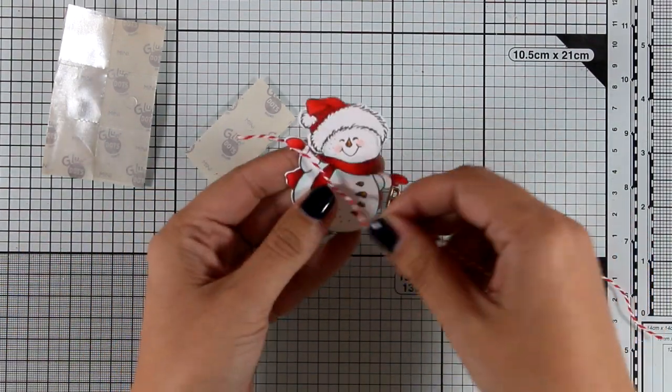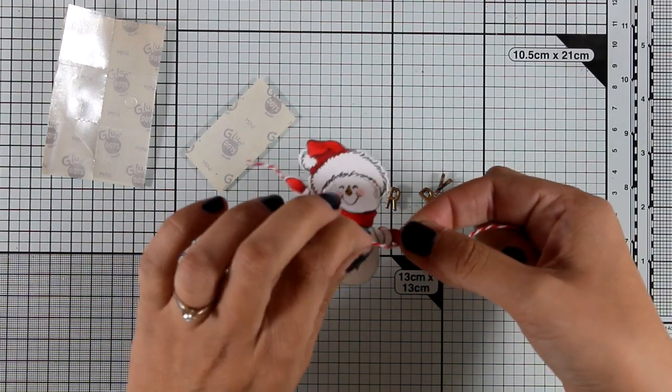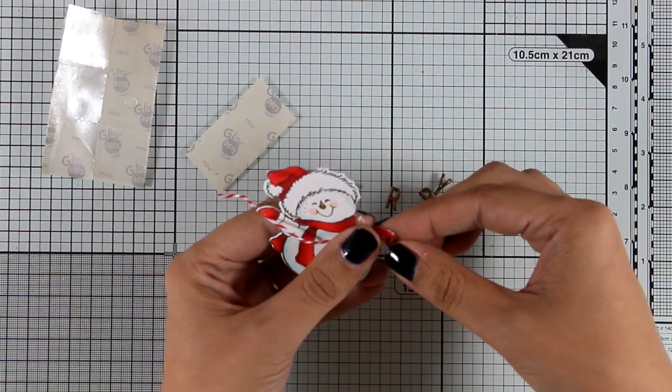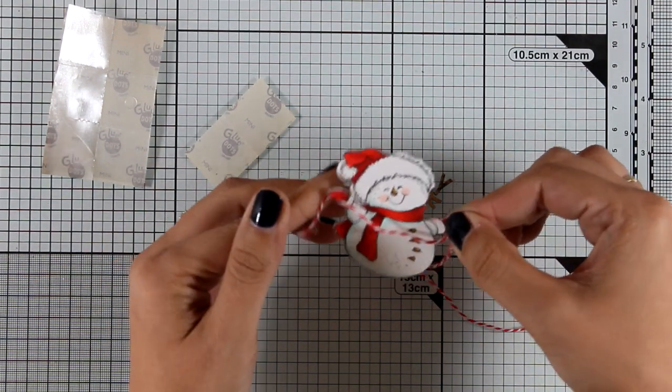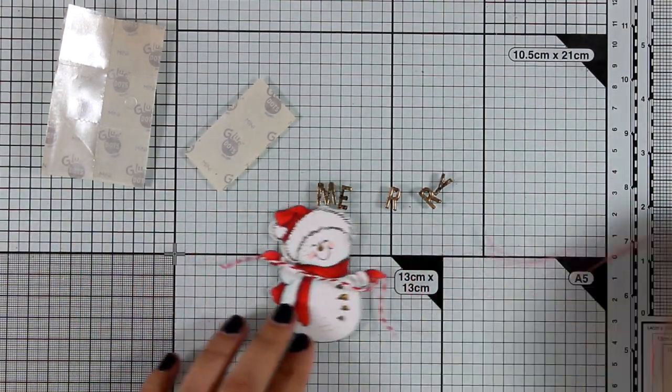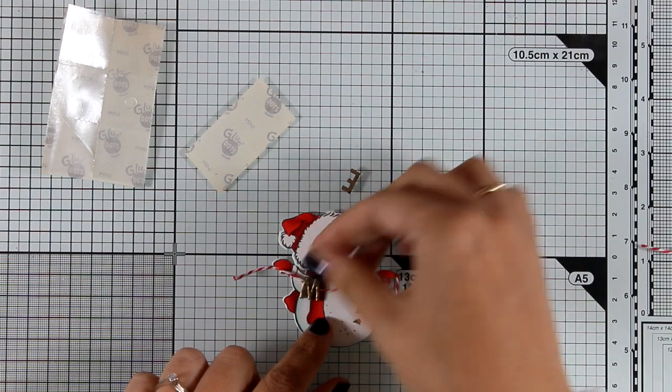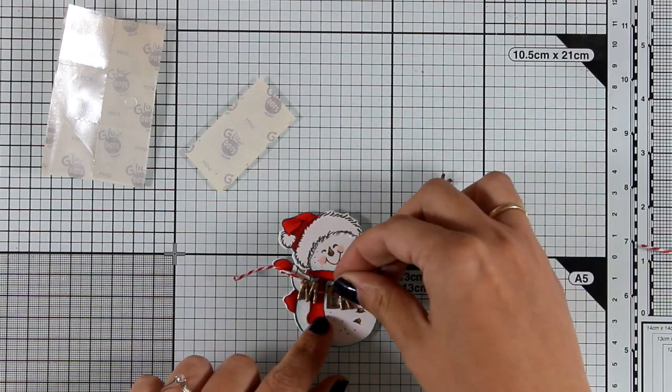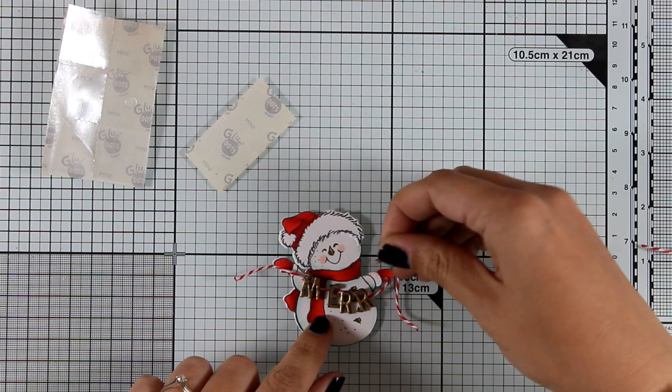As I am sticking it on his hands, I'm making sure that the baker's twine is quite loose since I want to have this curve. Instead of spelling the word merry like I will be doing today, you can spell the word peace or the word joy. So many different ideas.